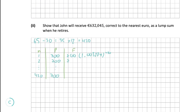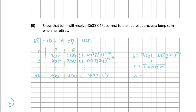Each subsequent payment's power decreases by one, down to the power of 1 for the last payment. From this table, the first term a = 700 × 1.003274^420, the common ratio r = 1 over 1.003274 (since each term is divided by 1.003274), and n = 420.